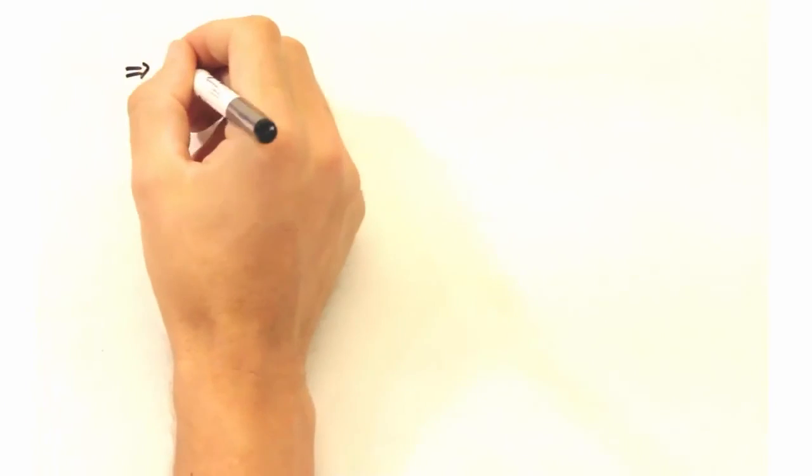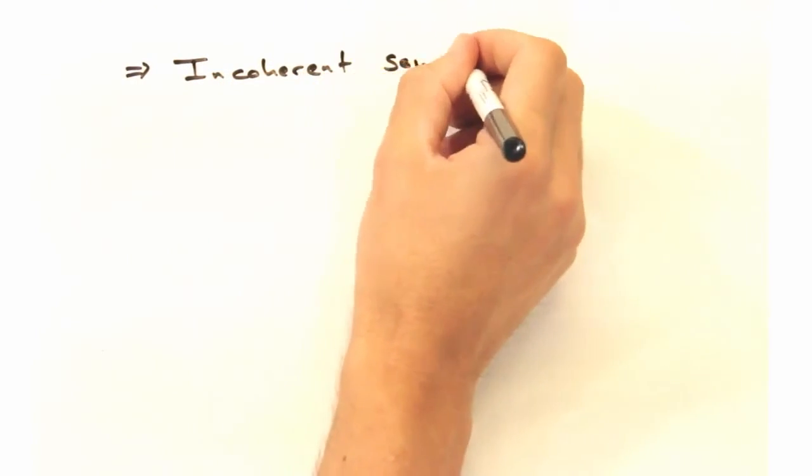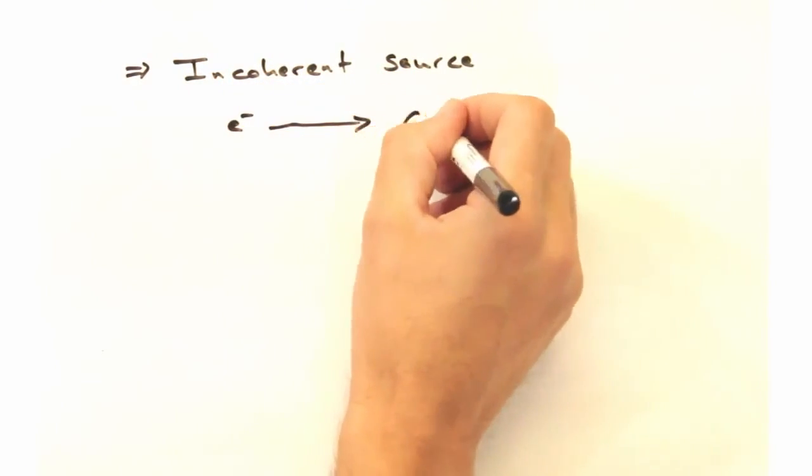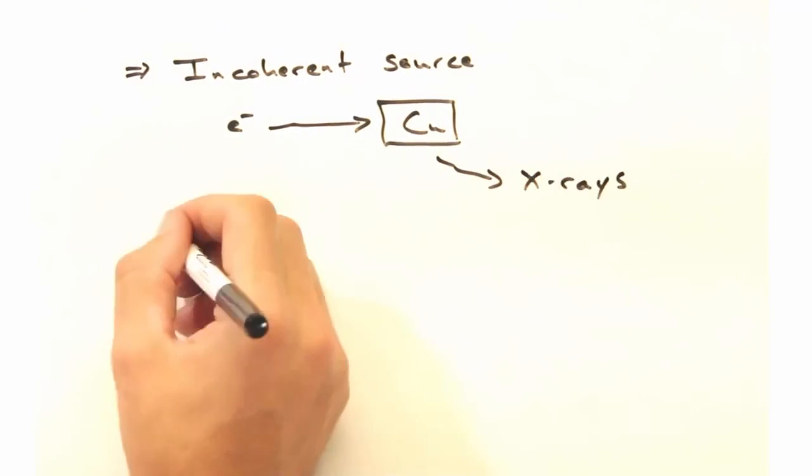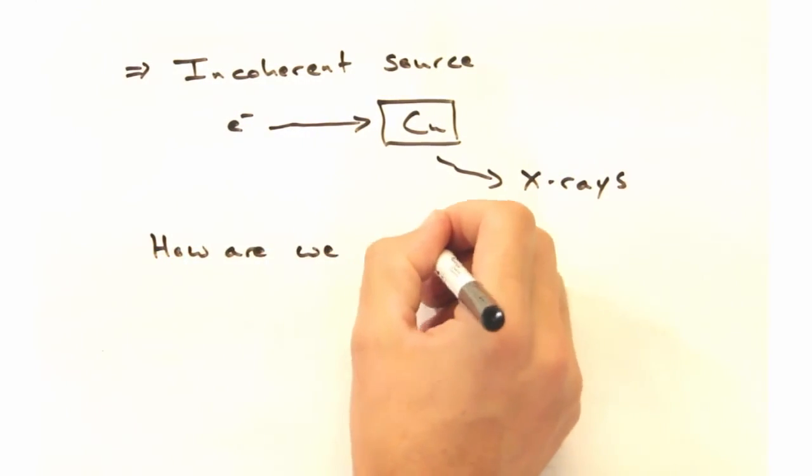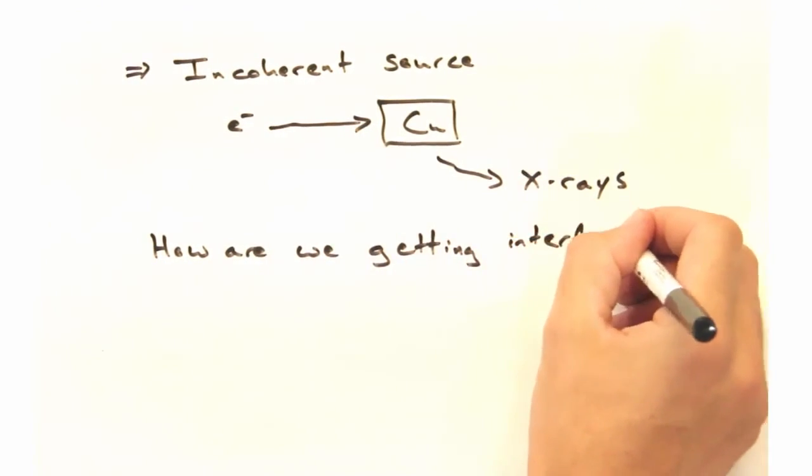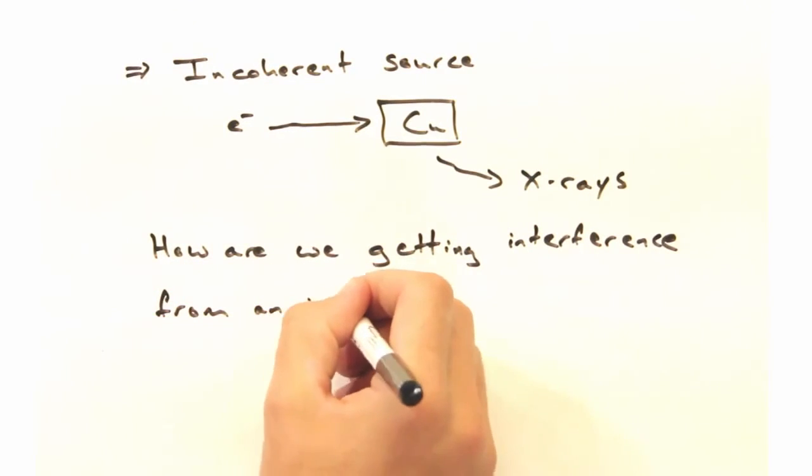And here's a last question. When we use an x-ray source, it's an incoherent source, which is to say that the individual photons are not in phase with each other. We're literally slamming electrons into a chunk of copper and having photons fly off. So how are we getting interference from an incoherent source?